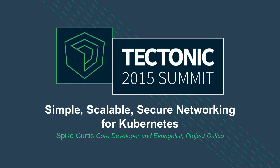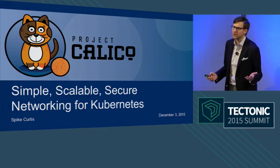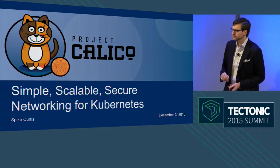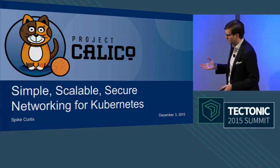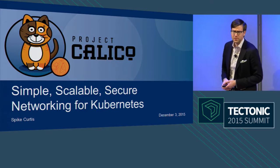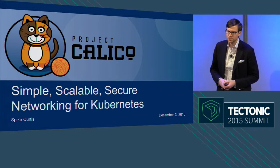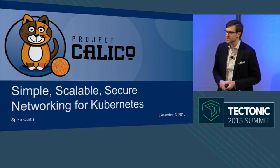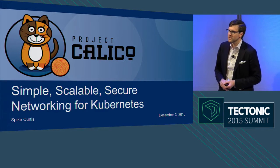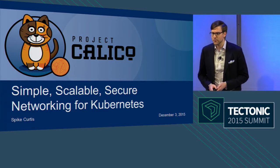Hi everyone. Thanks for sticking around into the second afternoon. I'm really glad to be here. My name is Spike Curtis. I'm a core developer on Project Calico. Before I worked on Calico, I was a forward-deployed engineer at Palantir Technologies, where I helped them deploy their intelligence application that helps intelligence agencies and police find terrorists and criminals into really secure government networks.